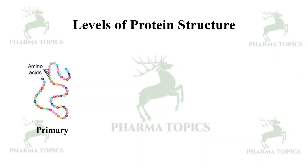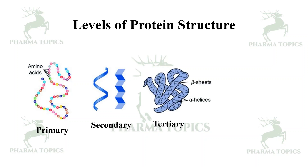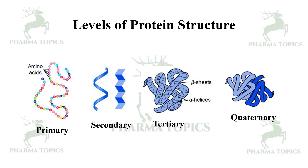The levels of protein structure are four: the first is primary, the next is secondary — which appears like ribbons or sheets — then the third is tertiary, and the fourth is quaternary structure.